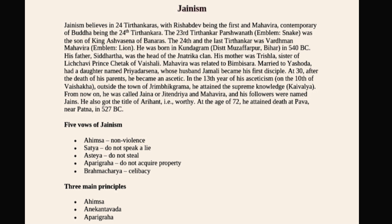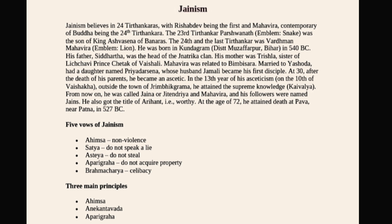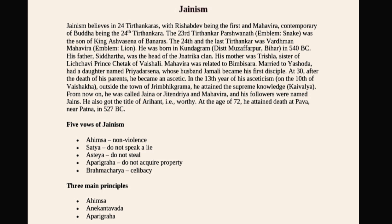At age 30, after the death of his parents, Mahavira became an ascetic. In the 13th year of his asceticism, on the 10th of Vaishakh, outside the town of Jrimbhikagrama, he attained supreme knowledge (Kevala Jnana). From then on, he was called Jina or Jitendra — one who achieved victory over his senses — and his followers became known as Jains.